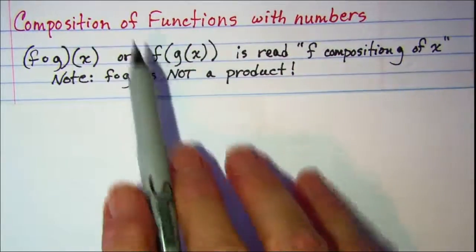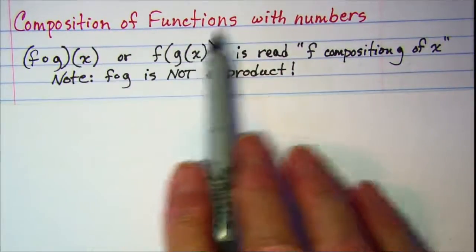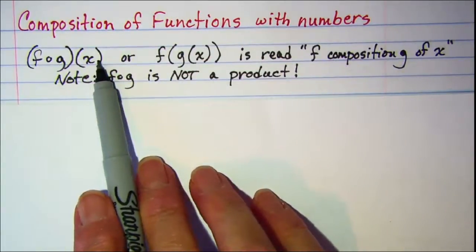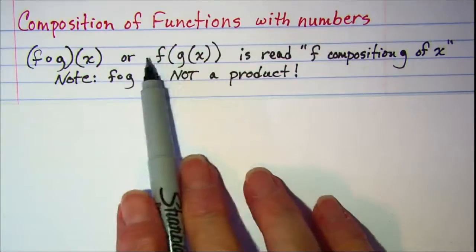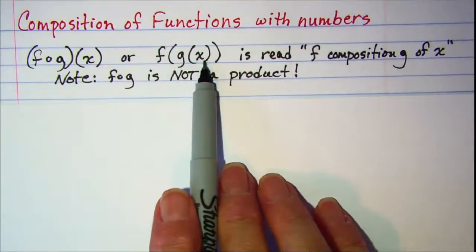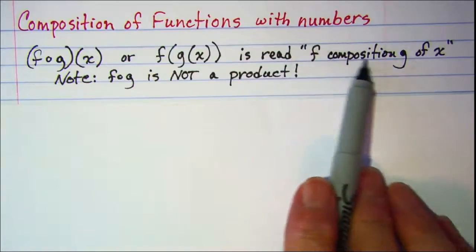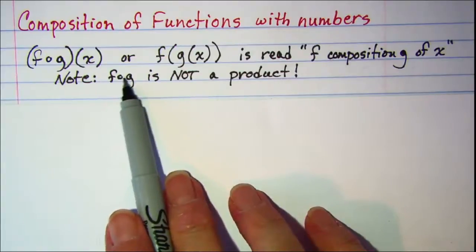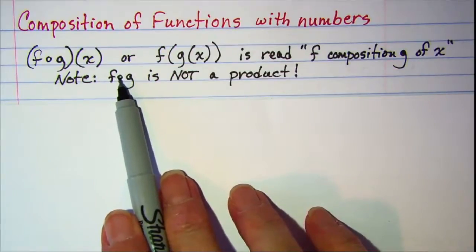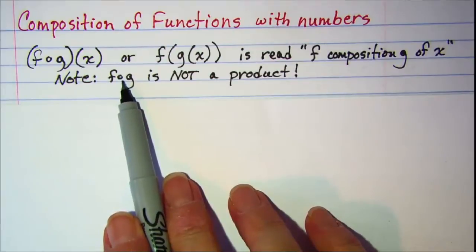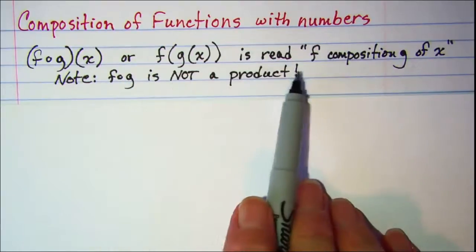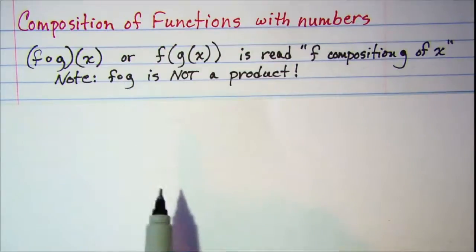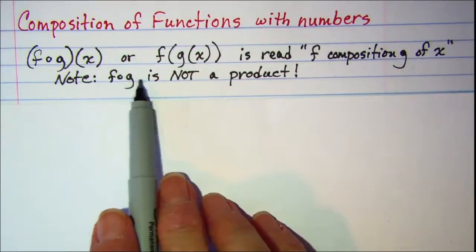In this video we'll be doing composition of functions with numbers. f composition g of x, or sometimes shown as f(g(x)), is read 'f composition g of x.' Note this little circle that's up a little higher, it's not on the line, is not a product, so be very careful. Whenever you see this notation, that means you're finding the composition of these two functions.